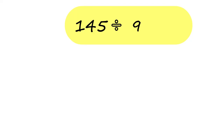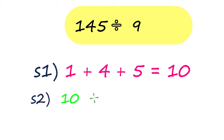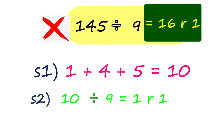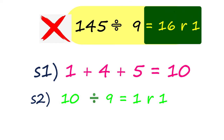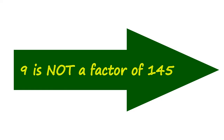Let's try 145. We get the sum of the digits, then divide 10 by 9. The answer is 1, remainder 1. Since the sum is not divisible by 9, then 145 is not also divisible by 9. 9 is not a factor of 145.